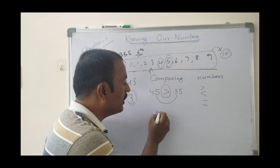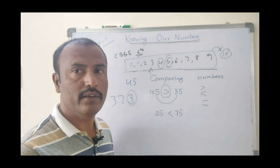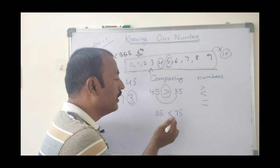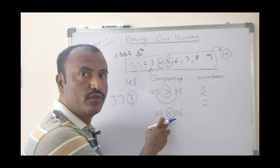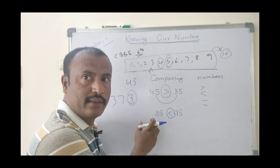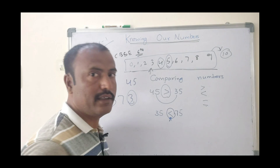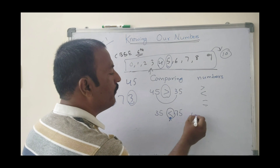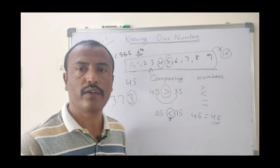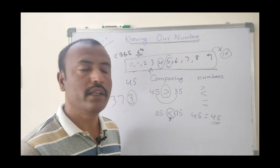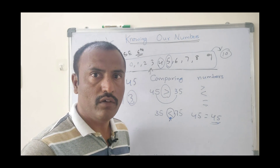One more thing: 35 is less than 75. The less than symbol is used for comparison — 35 is less compared to 75, that's why we use the less than symbol. Also, 45 equal to 45 — when two numbers are equal, we use the equal to symbol.